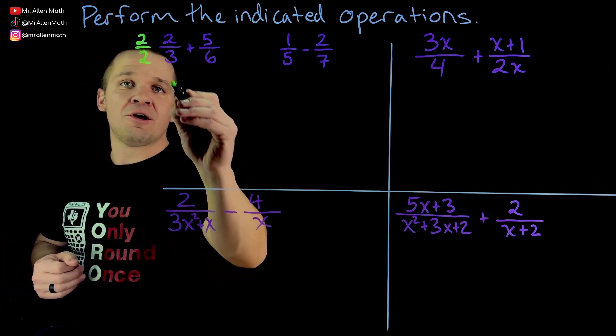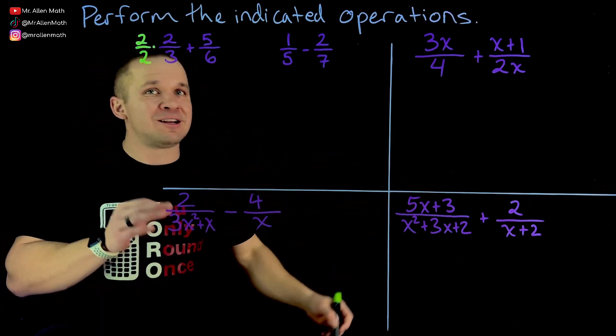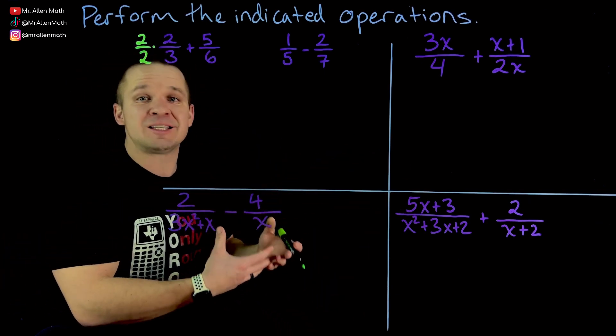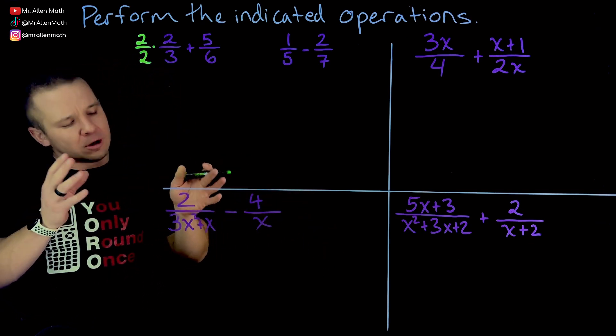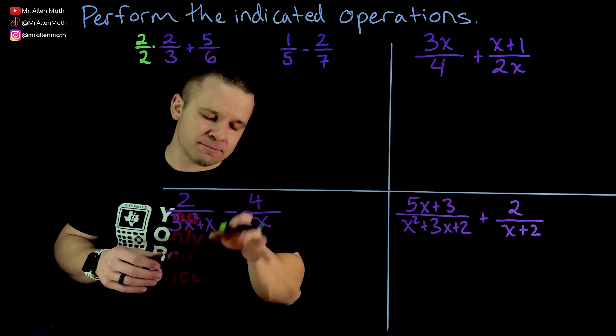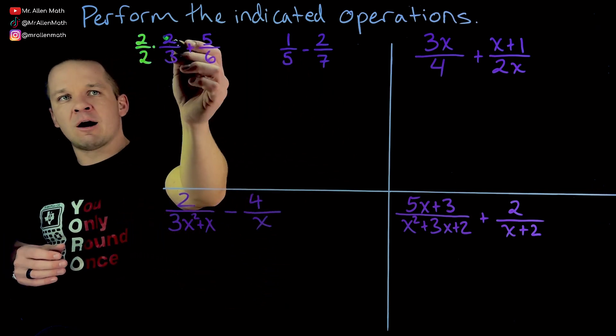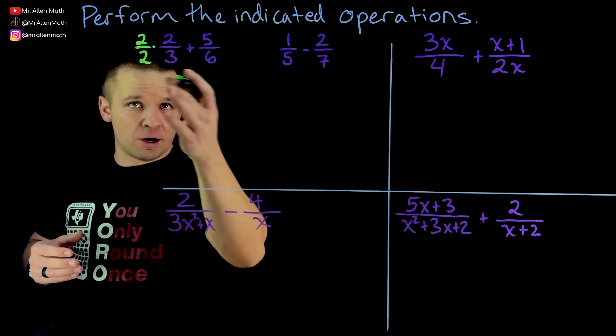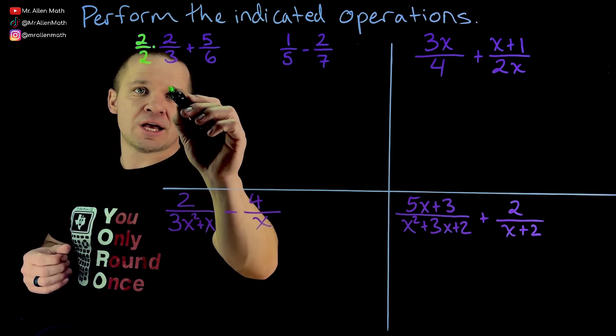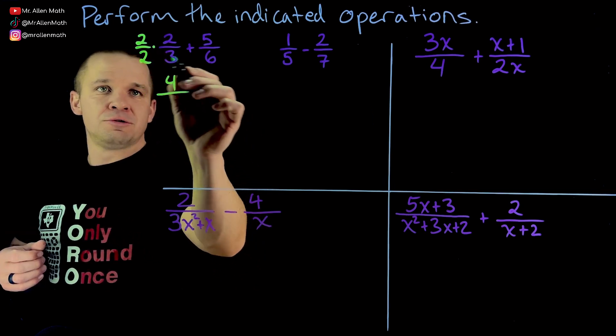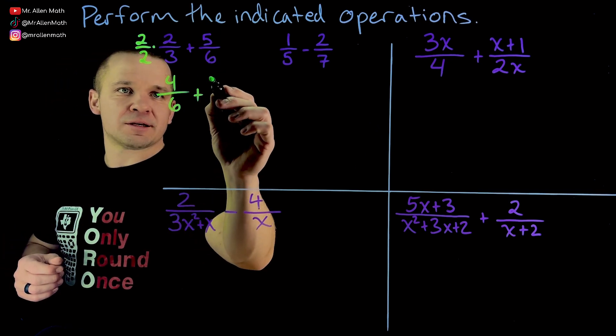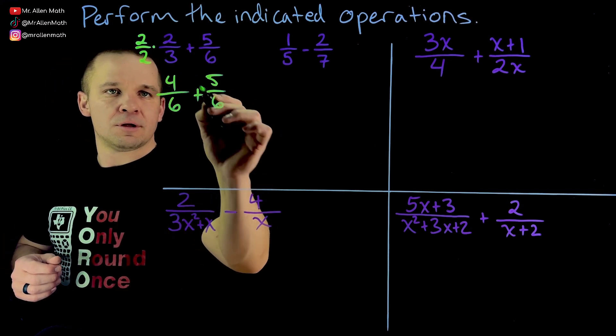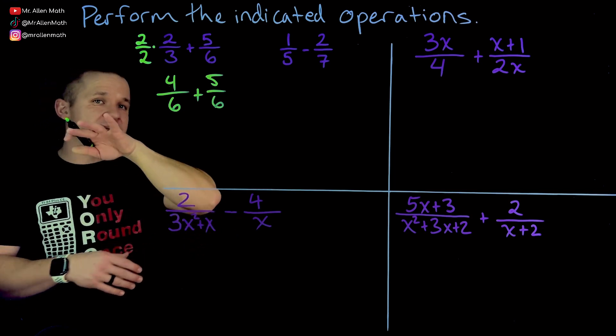That's one. Anything divided by itself is one and multiplying by one does not actually change it. It's equivalent. It'll look different, but it's equivalent. So multiplying by one is a cool little crafty mathematical move. All right. So now I have two times two in the numerator because we said multiplying across with multiplication of fractions. That's going to become four. Two times three is six plus, and then we have five over six. Boom. So now I have like denominators.